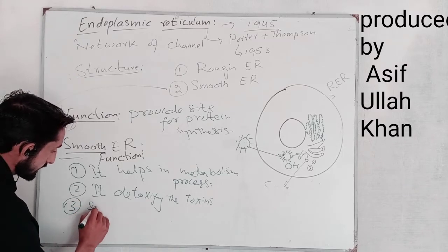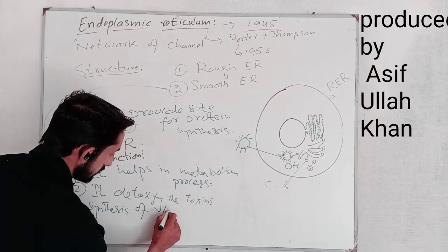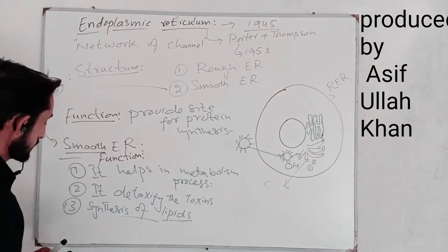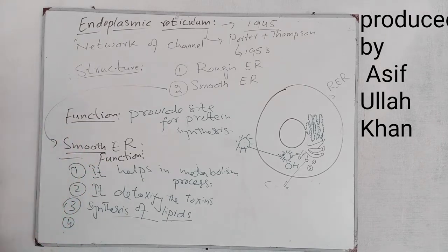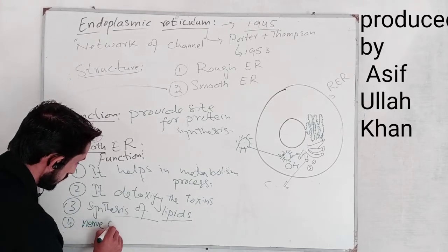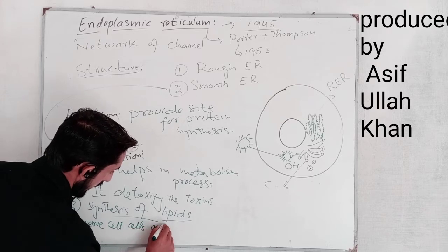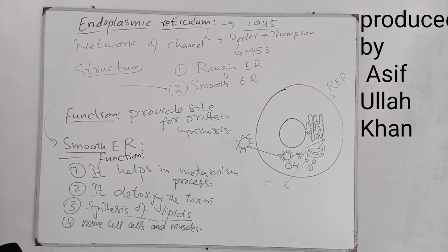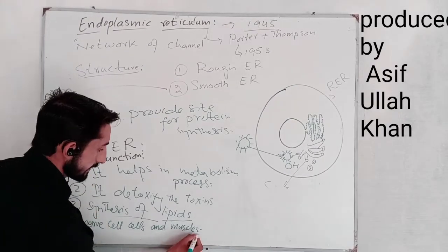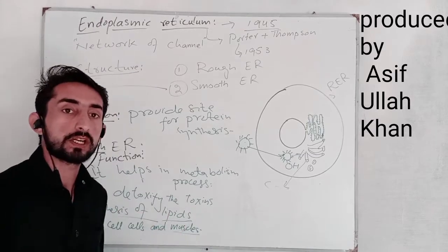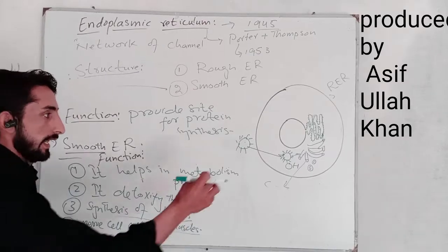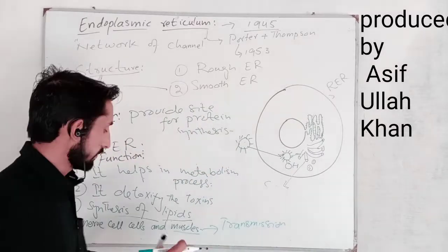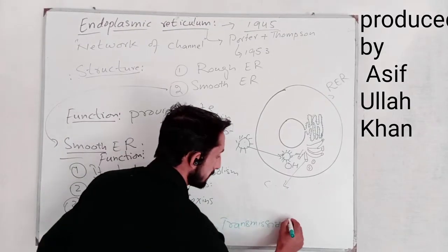Number three: synthesis of lipids. The formation of lipids occurs in the smooth endoplasmic reticulum. For some cells — like nerve cells and muscle cells — it also helps in the transmission of impulses. Impulses are messages, and in nerve cells and muscle cells, the smooth ER helps transmit these impulses.